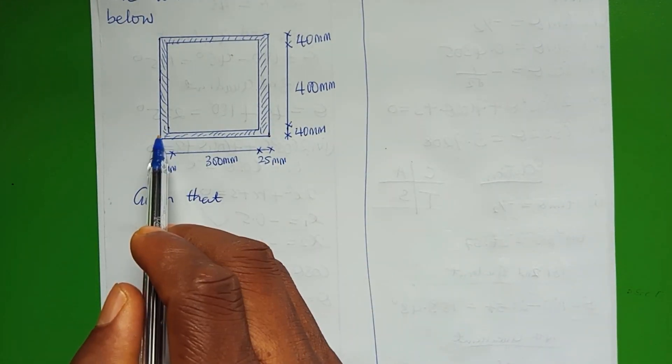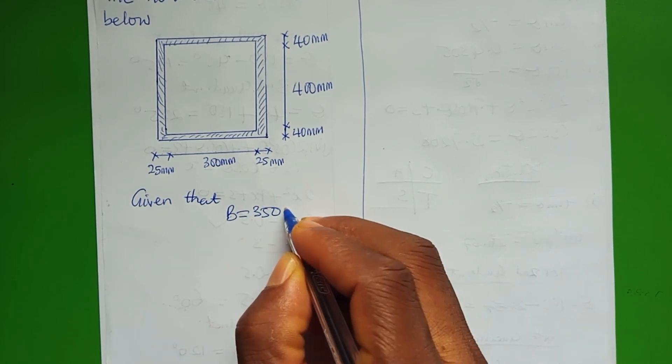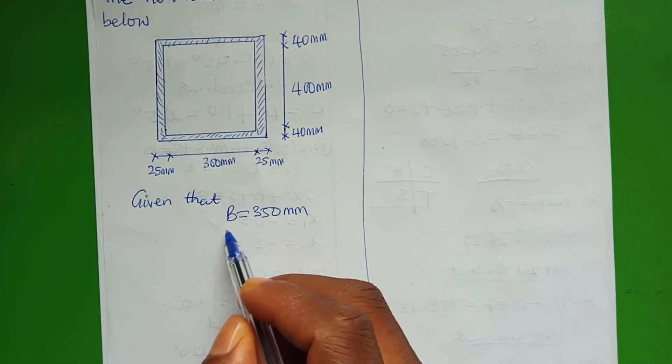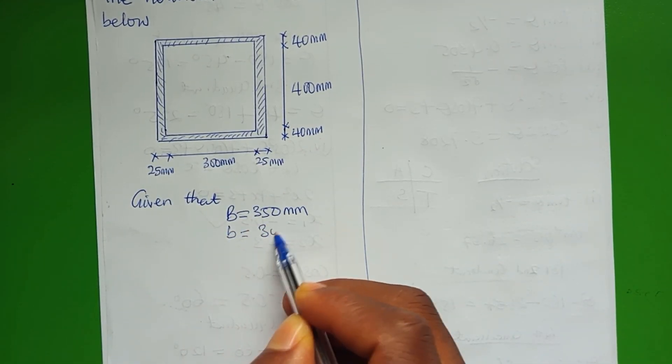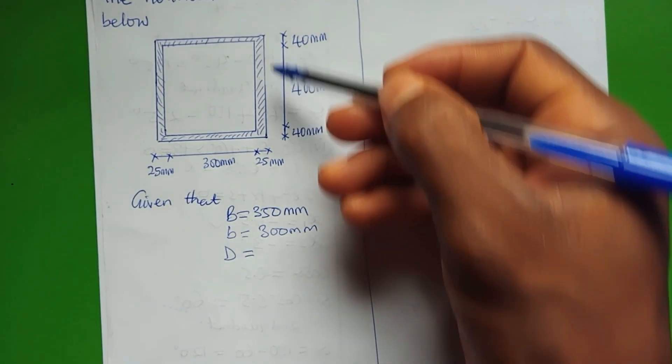We are given that the distance from here to here is 350, and that is our breadth B equals 350 millimeters. The distance of the square inside is our small b which is 300 millimeters.